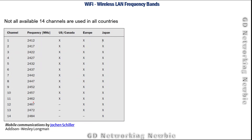Although we have 14 channels, their usage differs by country. For example, channel number one with center frequency 2.412 gigahertz is used in Canada, Europe, and Japan. However, channel number 14 is not used in the US, Canada, or Europe — it is only used in Japan. So all 14 channels exist but are not permitted in all regions.